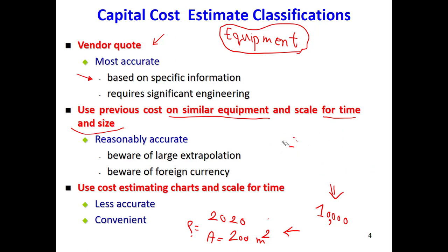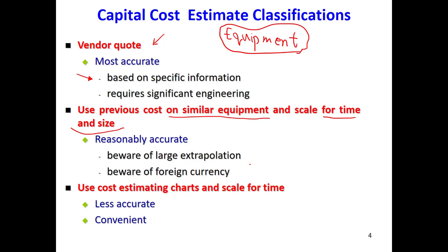This method is reasonably accurate and very quick — saving time in calculation. However, we must be careful that the indicator factors have a range of applications. For example, we cannot use a factor for a heat exchanger in the range of 100 to 500 square meters and apply it to one with 2,000 square meters. Extrapolation must be done carefully. We can also use charts, which are less accurate but convenient.